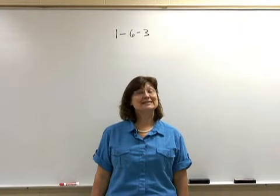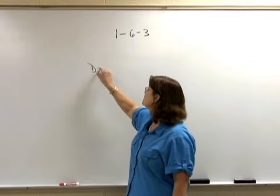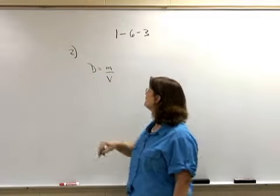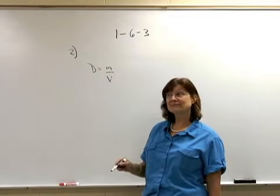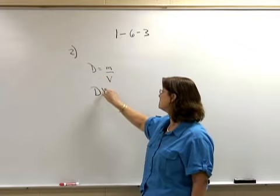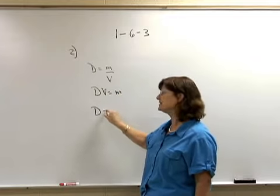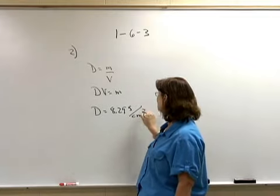Number 2 is a density problem. My formula for density is equal to mass divided by volume. In this problem, I'm solving for mass. Therefore, I'm going to multiply by volume. Density times volume equals mass.